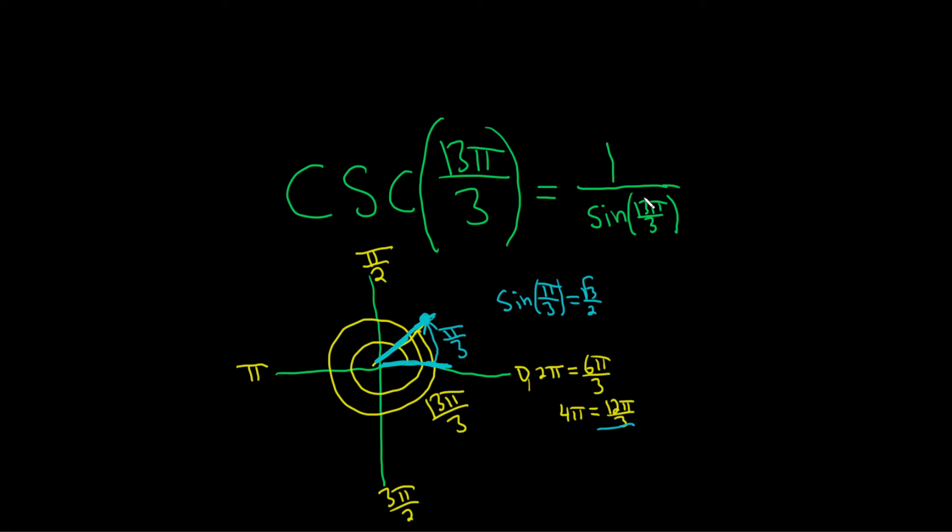So the y-coordinate is positive, so the sine of 13π over 3 is also positive. So this is equal to 1 over the square root of 3 over 2. So we have 1 divided by this. That means 1 times the reciprocal. So we end up with this, which is equal to 2 over the square root of 3.